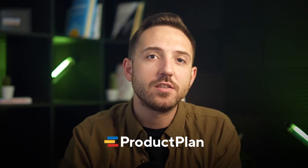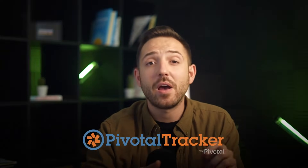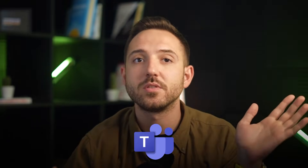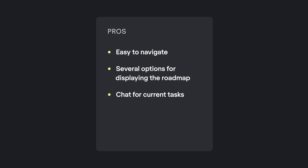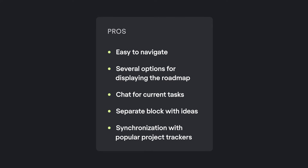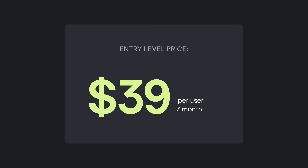Product Plan is an application similar in functionality to the previous one. It includes templates and has advanced integration with services such as Jira, GitHub, Slack, Pivotal Tracker, Trello, Azure DevOps, Confluence, Microsoft Teams, and more. Advantages: easy to navigate, several options for displaying the roadmap, chat for current tasks, separate blog with ideas, synchronization with popular project trackers. Disadvantages: no predefined templates. Entry level price: $39 per editor per month.